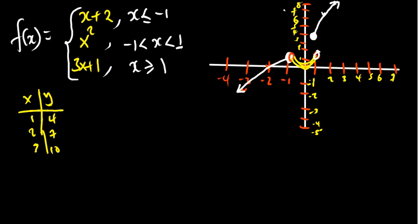So that is how you can graph a piecewise function. The key is understanding the conditions: if the condition is less than or equal to, the endpoint has a closed circle meaning it's included. If it is just less than or greater than, we use an open circle, meaning the point is not included.